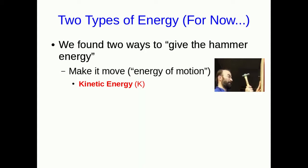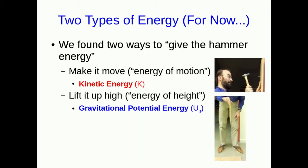But the other way we could give the hammer energy, give it the capacity to do work on the nail, was to lift it up higher than the nail. And so this is an energy of height. We'll call this gravitational potential energy. Now a lot of you who've encountered this already in other courses will want to just call it potential energy and leave it at that. But as we'll see, there are other kinds of potential energy. And so I'm going to insist that you be more specific. This is gravitational potential energy.